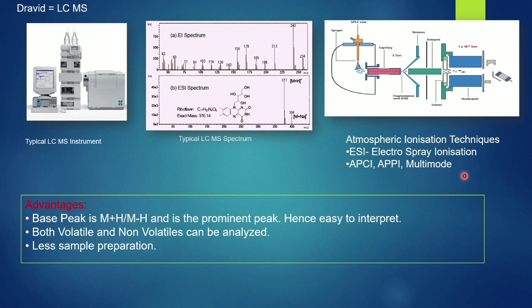Advantages of LCMS: most of the time we will get a base peak that will be M+H — if it took a proton then it will be M+H, if it lost a proton then it will be M-H. So it will be very easy to interpret. Both volatile and non-volatile can be analyzed — in GCMS, as I mentioned, we can do only volatile components. And there is very little sample preparation; you can directly dissolve in a solvent and inject into your instrument.